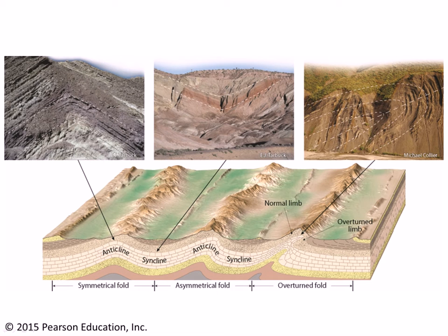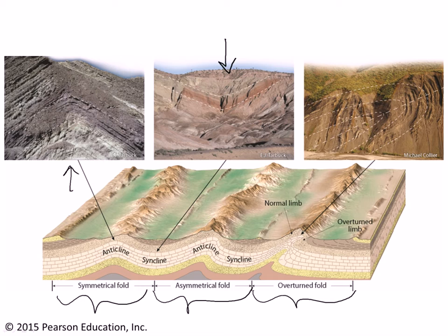Next, you'll be asked to take a look at folds. Folds can go up in the middle, in which case we call them anticlines, or they can go down in the middle, in which case we call them synclines. They may be symmetrical, meaning the two limbs dip at equal angles in opposite directions, or they may be asymmetrical, meaning the angle of dip varies between one limb and the next. Or they could even be overturned, such as in this example, where one of the limbs of the fold has been tectonically inverted — upside down relative to its original depositional position.